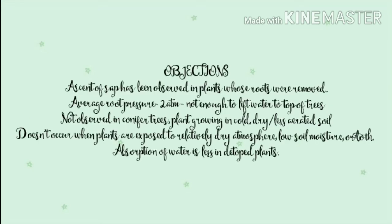The major objections raised against the root pressure theory are: ascent of sap has been observed in plants whose roots were removed. In most plants, the average root pressure is 280 kPa, which is not enough to lift water to the top of tall trees. Root pressure is not observed in conifer trees and also in plants growing in cold, dry or less aerated soil, even though ascent of sap is normal in them. Root pressure does not occur in plants exposed to relatively dry atmosphere, low soil moisture or both, because water in their stem is under tension and the absorption of water is less in de-topped plants than those with apex.